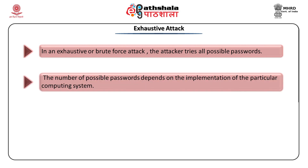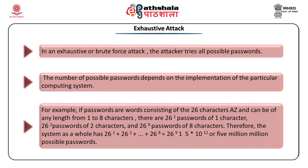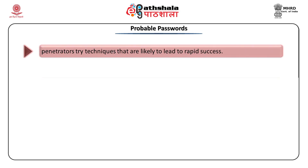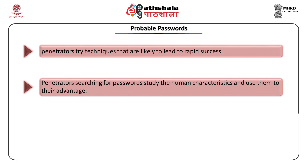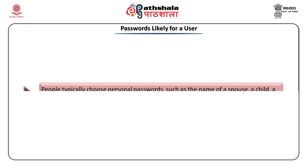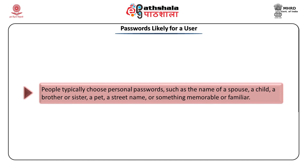The exhaustive attack means trying passwords consisting of 26 characters a to z at any length from 1 to 8: there are 26^1 passwords for 1 character, 26^2 for 2 characters, and 26^8 for 8 characters. For probable passwords, penetrators try to identify human characteristics and take advantage of them. If people prefer short passwords, the penetrator will try them in order of length — first one character, then two, then three. Users usually use passwords such as the name of a spouse, child, sibling, a pet, a street name, or something memorable or familiar.